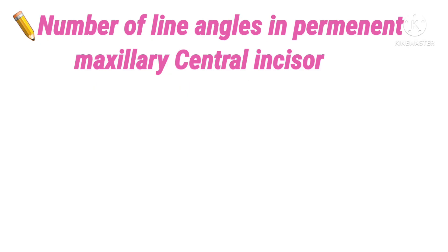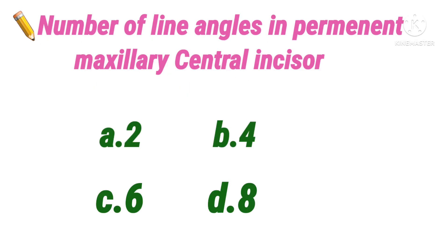The next question: the number of line angles in a permanent maxillary central incisor is — option A 2, B 4, C 6, D 8. The number of line angles in anterior teeth is 6 and in posterior teeth is 8.